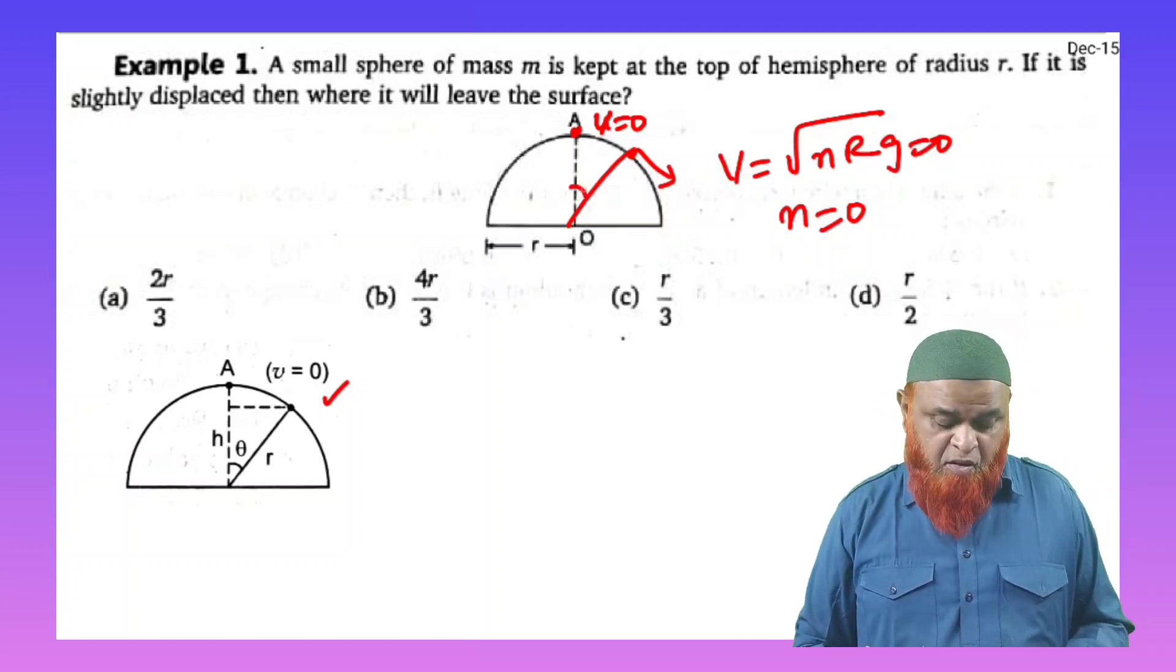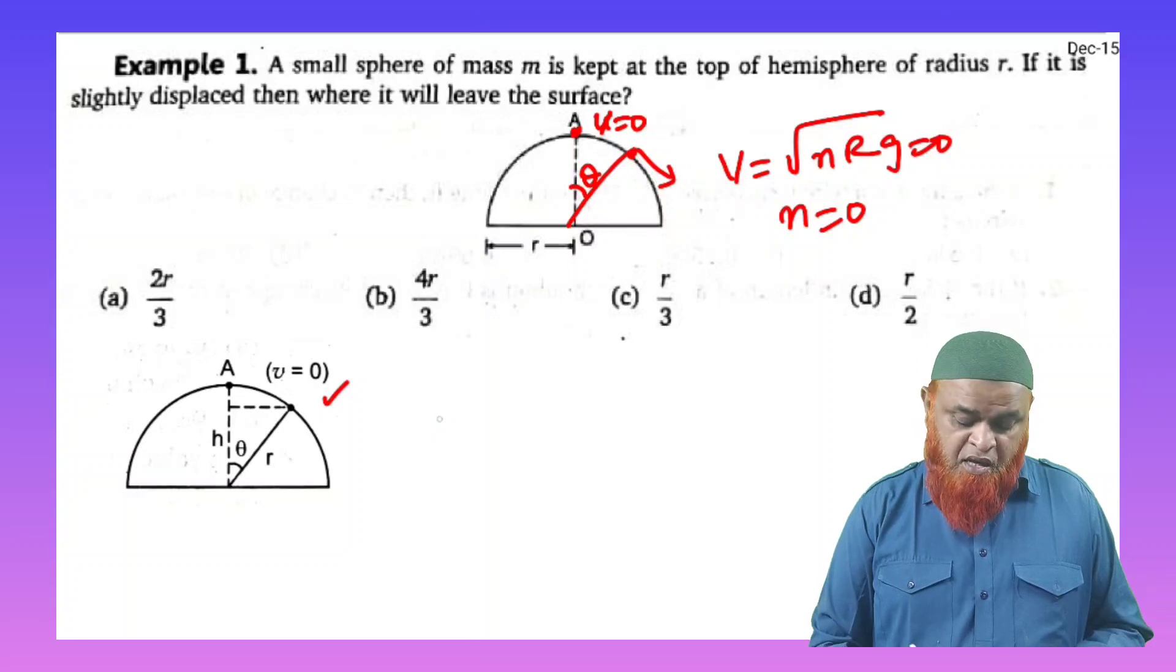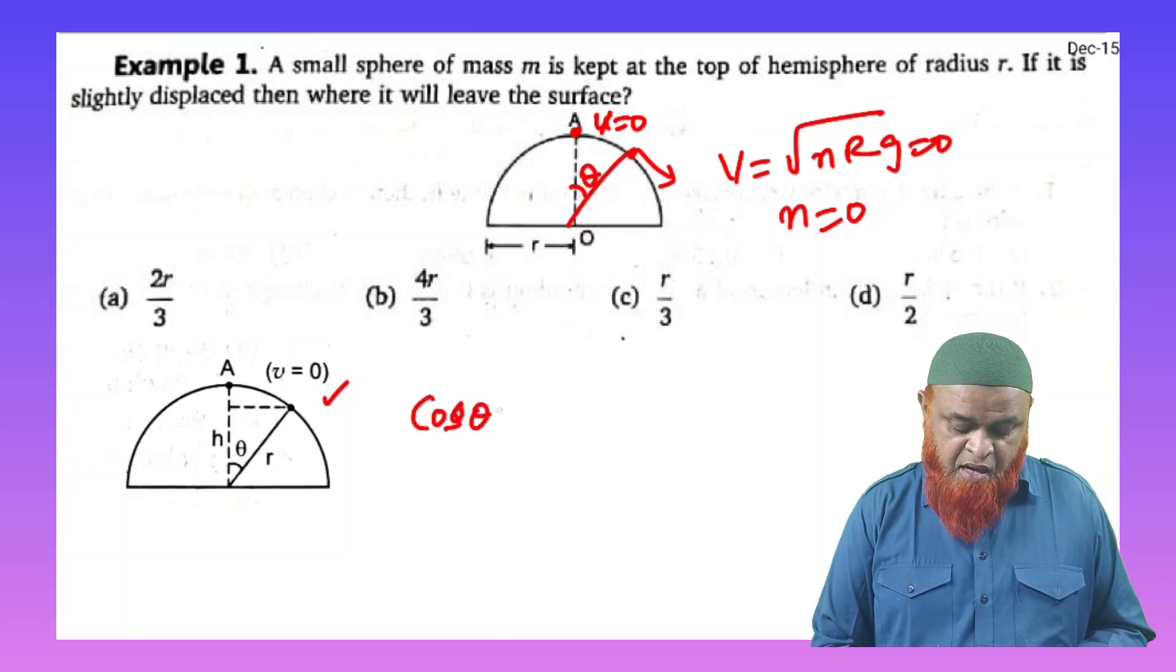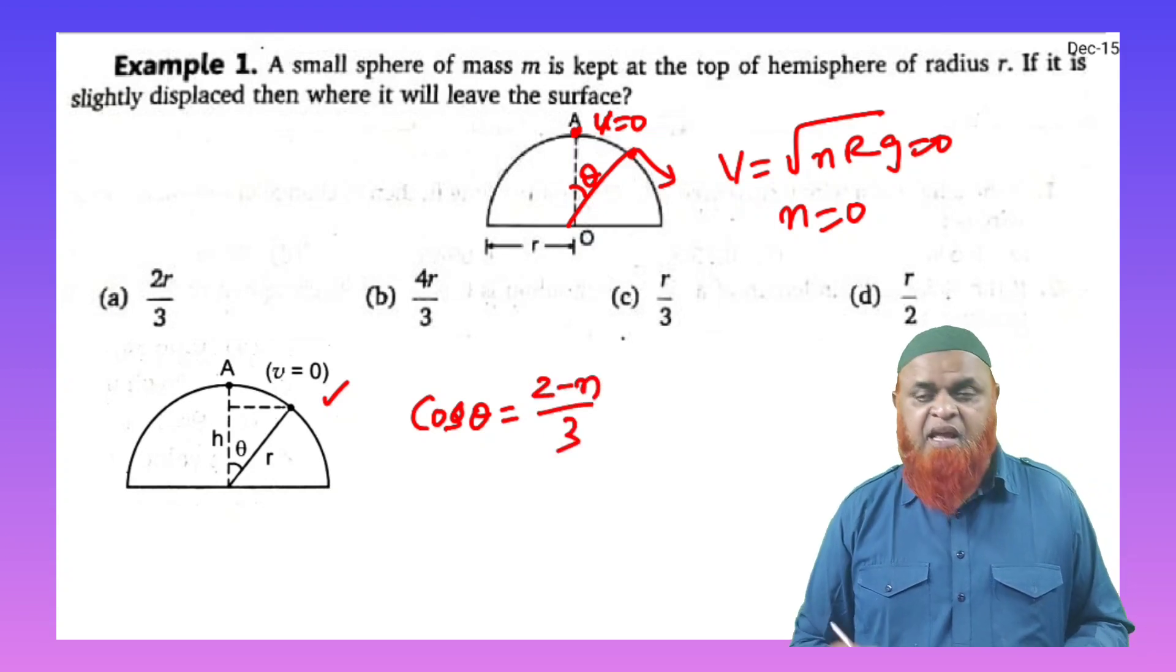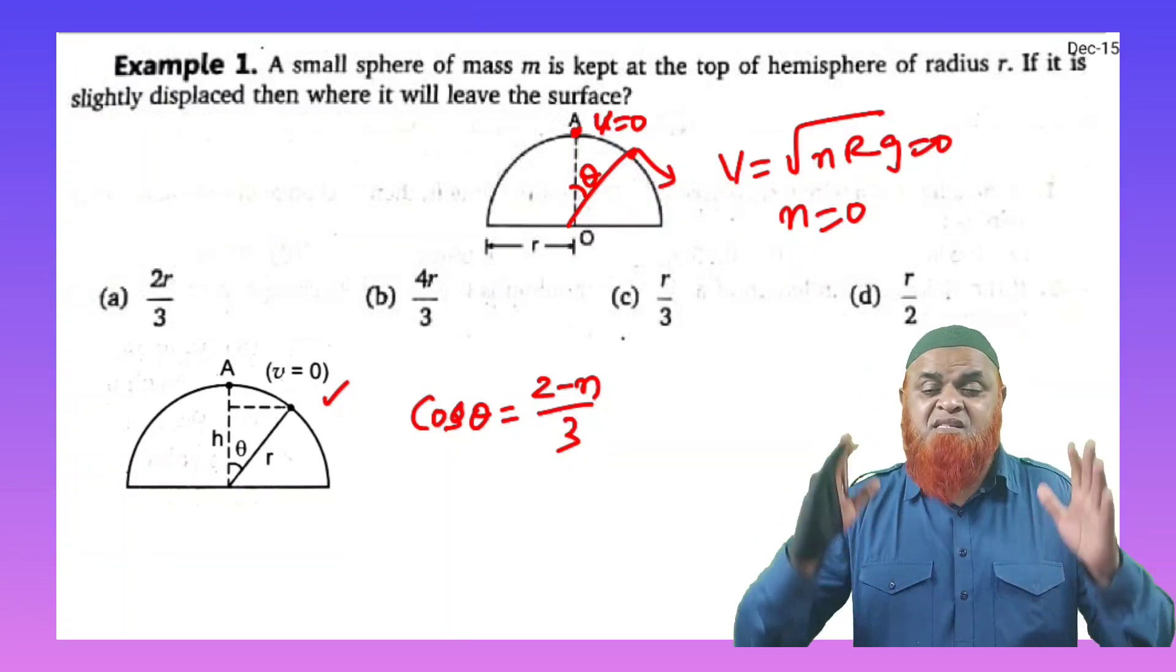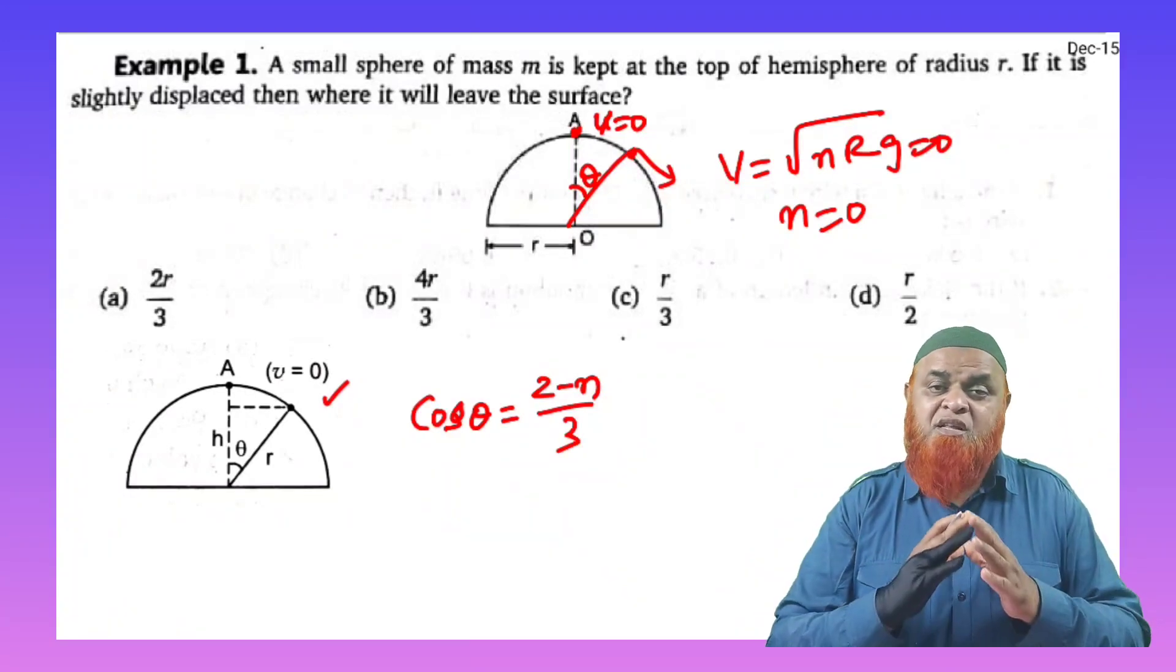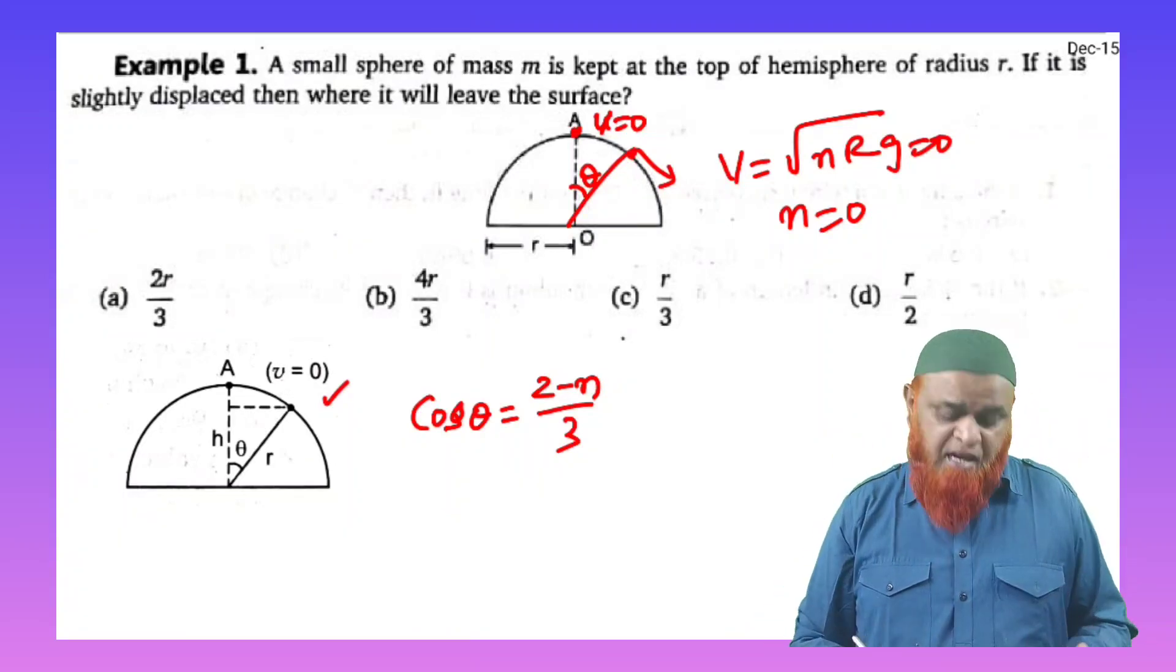So as n is considered to be 0, there is a shortcut formula to find out this angle theta. The shortcut formula for finding the angle theta is cos theta equals 2 minus n by 3. This shortcut formula if you use, you can solve the problem in a fraction of seconds. You can directly write the answer just by seeing the question.